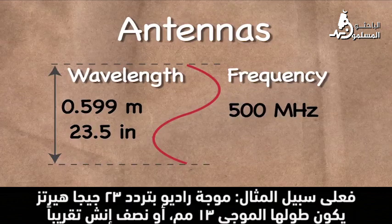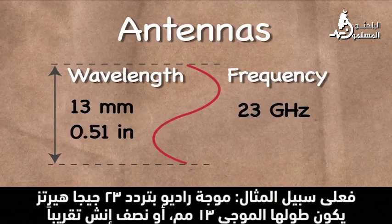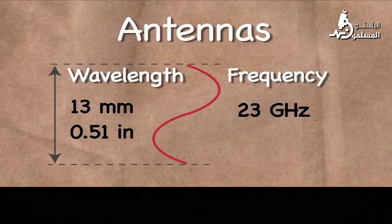For example, an RF signal with a frequency of 23 GHz has a wavelength of just 13 mm, or just over half an inch.